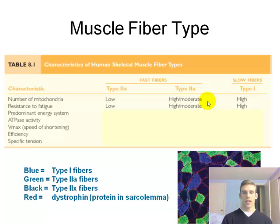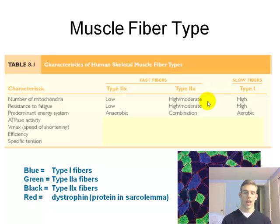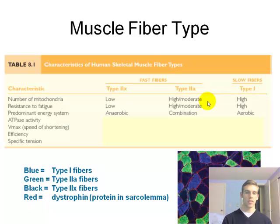The predominant energy system is mostly anaerobic for type 2X fibers and mostly aerobic for type 1 fibers. Type 1 fibers use their many mitochondria and the oxidative phosphorylation system to produce ATP, while type 2X fibers rely on ATP-PCr and glycolysis.